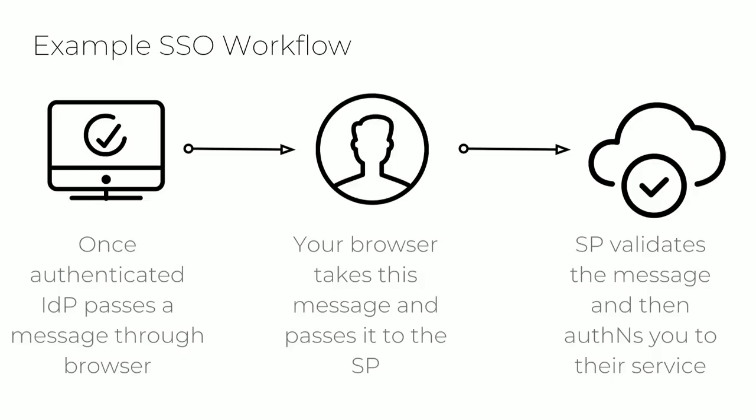A fairly common SSO flow starts with authentication to the IDP. The IDP then generates and signs a message intended for the SP but passes it through the browser as a message passer. The browser takes this message and passes it to the SP. When the SP receives this message, it validates it and determines how to authenticate the user. Notably, the browser process is under user control, and these messages containing authentication information pass through it, so service providers must be able to authenticate the contents of those messages.